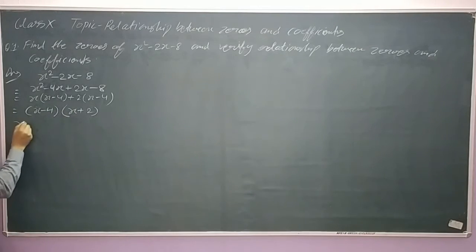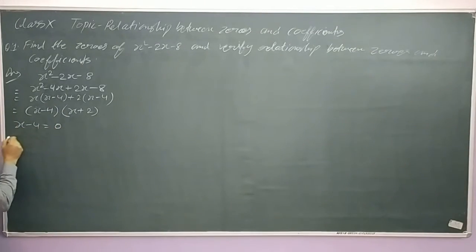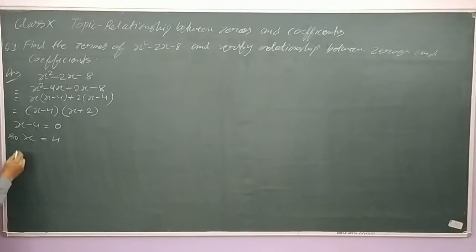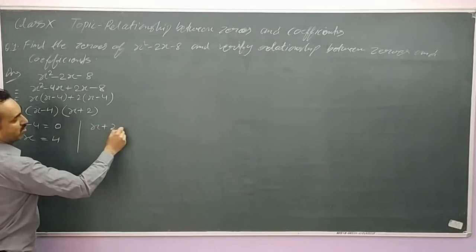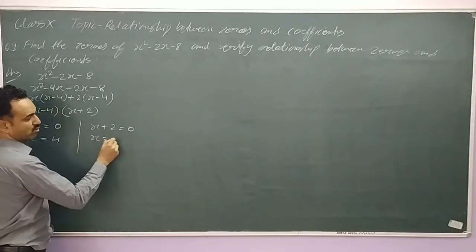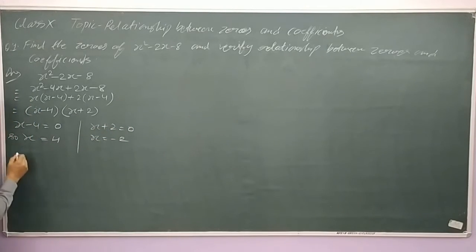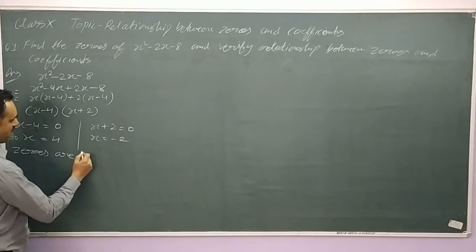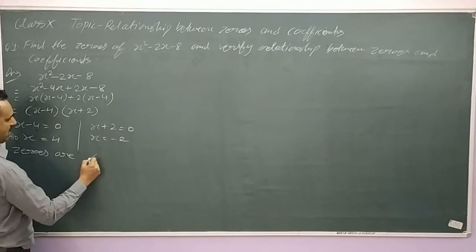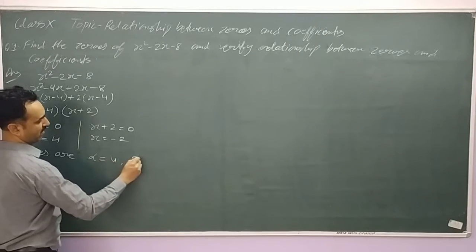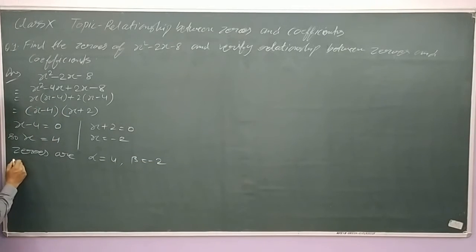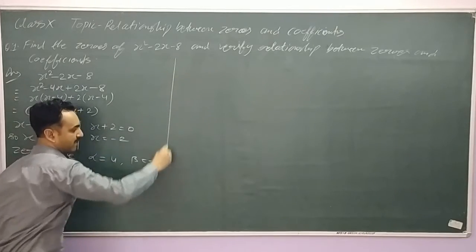Now, x minus 4 equals 0 gives x equals 4, and x plus 2 equals 0 gives x equals minus 2. So the zeros are: alpha equals 4 and beta equals minus 2.